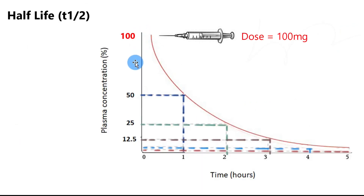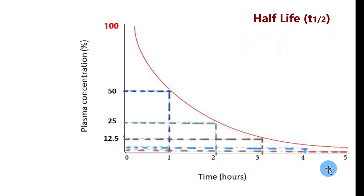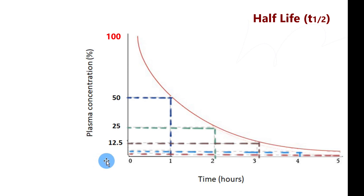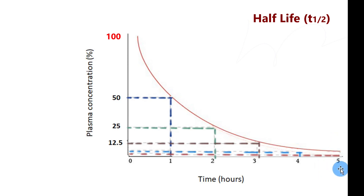The drug concentration progressively decreases until there is no drug left in the plasma — this is drug clearance. There are repeated half-lives until the drug is completely eliminated. What we normally say is that a drug is generally almost completely eliminated after five half-lives. Theoretically, by the time we reach the five-hour mark, the drug has been eliminated from the body.